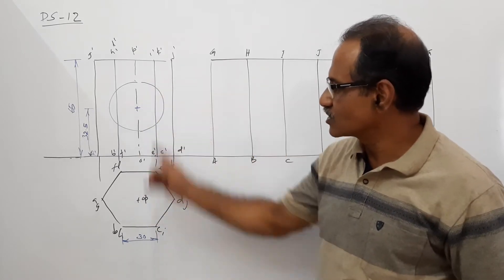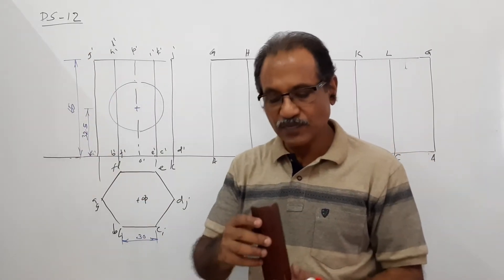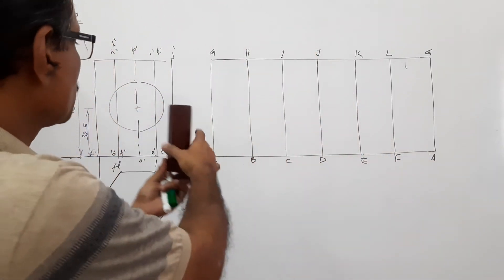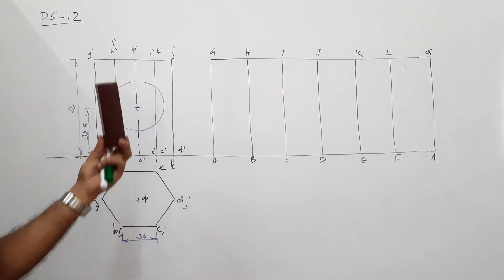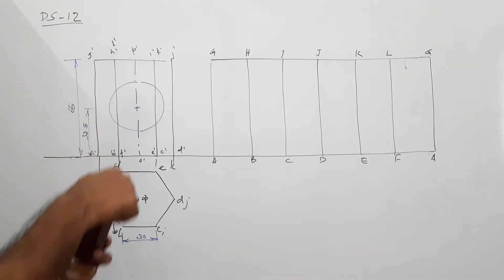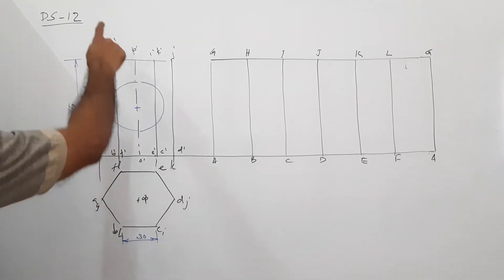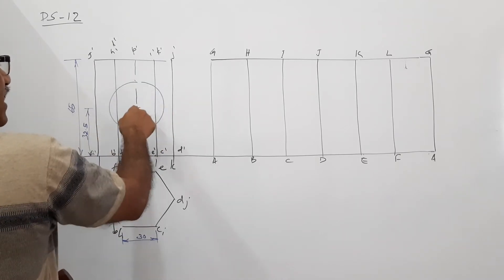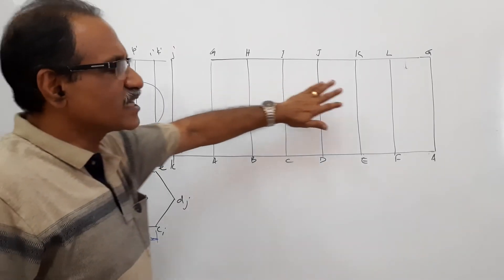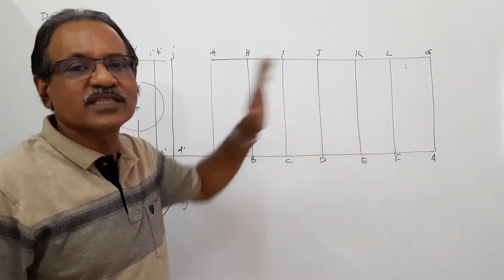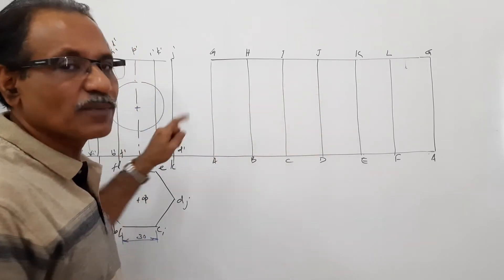I have drawn the planar deviation of the hexagonal prism — 30mm side of base and 65mm axis. This prism has a cylindrical hole drilled through it: a cylindrical hole of 40mm diameter, drilled so that the hole axis meets the prism axis. Find the center of the prism axis and draw a circle of 40mm diameter, that is 20mm radius. This is the lateral surface development of the prism. You have to show the changes in the development because of the presence of the hole.